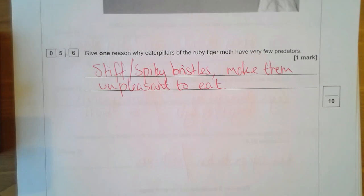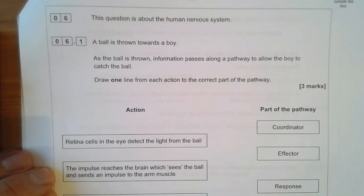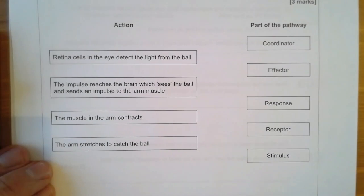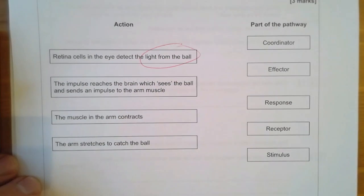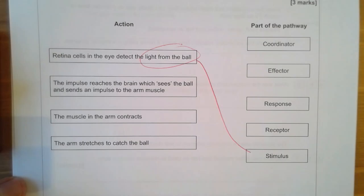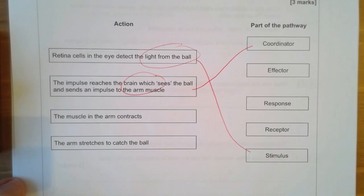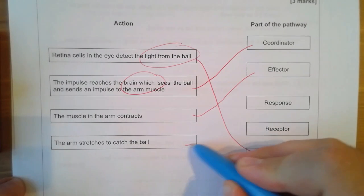Question six is about the human nervous system. A ball is being thrown towards a boy — information passes along a pathway to allow the boy to catch the ball, and we're looking at a reflex arc. The retina cells in the eye detect the light from the ball — that's a change in the environment, which we know as a stimulus. The impulse reaches the brain, which sees the ball — the brain is the coordinator. The muscle in the arm contracts — that's the effector. The arm stretches to catch the ball — catching the ball is the response.